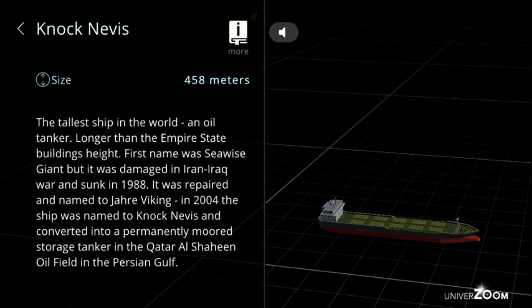Knock Nevis, size: 458 meters. The tallest ship in the world, an oil tanker. Longer than the Empire State Building's height. First name was Seawise Giant but it was damaged in Iran-Iraq War and sunk in 1988. It was repaired and named to Jahre Viking. In 2004 the ship was named to Knock Nevis and converted into a permanently moored storage tanker in the Qatar Al Shaheen oil field in the Persian Gulf.